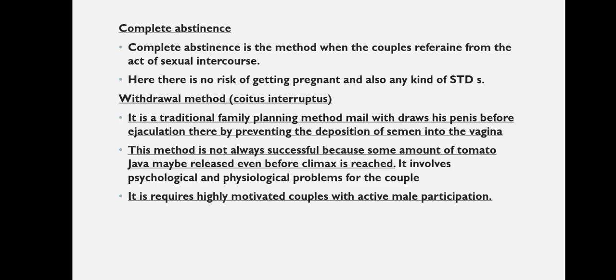The withdrawal method or coitus interruptus is a traditional family planning method in which the male withdraws his penis before ejaculation, thereby preventing the deposition of semen into the vagina. It is not always successful because some amount of semen may be released even before the climax is reached. It involves both psychological and physiological problems for the couple and requires highly motivated couples with active male participation.